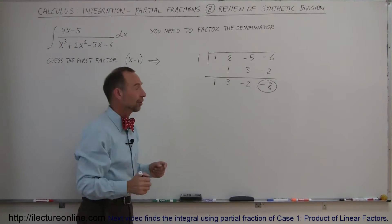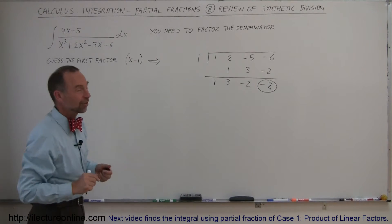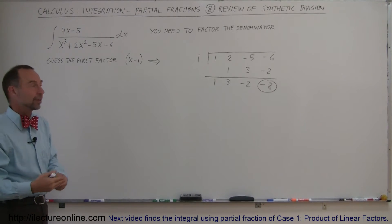Well, if that is not a 0, if this last number is not 0, then this was not a factor of this denominator. Then you try the next factor.